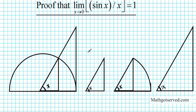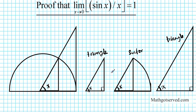This first shape is a right triangle, this is a sector, and this is also a right triangle. Note that both outer shapes are right triangles. To do this proof, you need to remember the area of shapes — the area of a triangle is one half base times height.